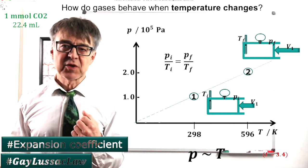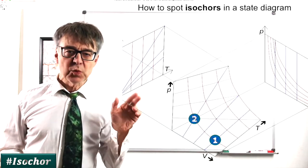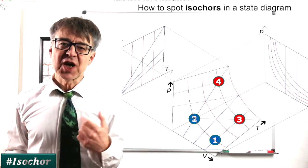And of course, that corresponds to a straight line in the phase diagram. The states 1 and 3, as well as 2 and 4 lie on such isochors.